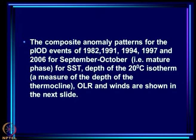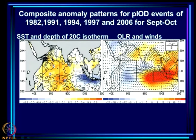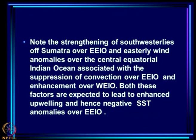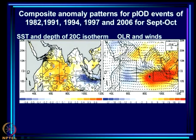The composite anomaly patterns of several positive IOD events show the mature phase: SST shown in shades and contours of the depth of the 20°C isotherm — all negative over the east, showing the thermocline depth decreasing markedly over the EEIO and increasing over the WEIO. The west is warmer than the east, convection is suppressed over the east and enhanced over the west. Associated with this is a very strong easterly wind anomaly flowing from east to west.